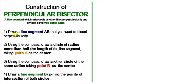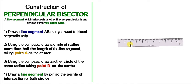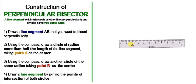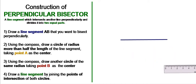Now let's see how we can draw this. The first step is to draw a line segment AB that you want to bisect perpendicularly. I am taking a ruler and drawing a line of eight centimeters. This is the line of eight centimeters.